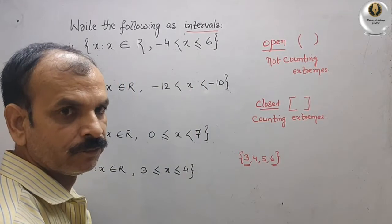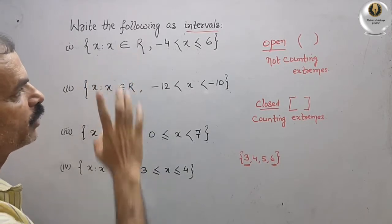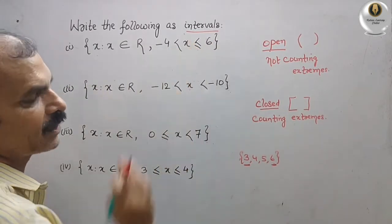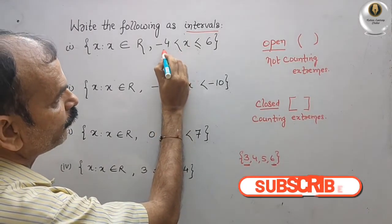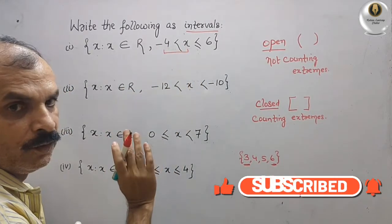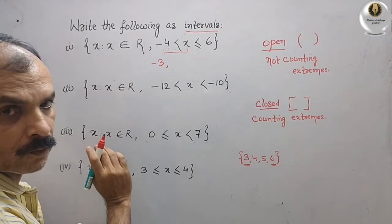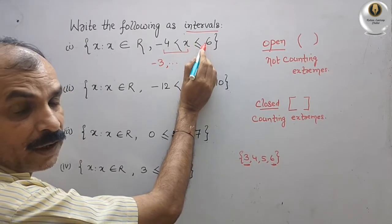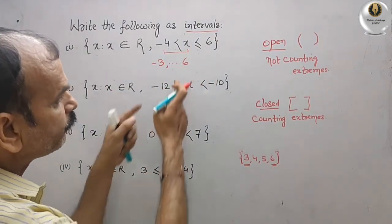Now for our first question: the set of all x such that x belongs to the real numbers and -4 < x ≤ 6. Reading the inequality, x is greater than -4, so the next value is -3 and so on. Here, x is less than or equal to 6, which means we are counting 6 as well, so we go up to 6.